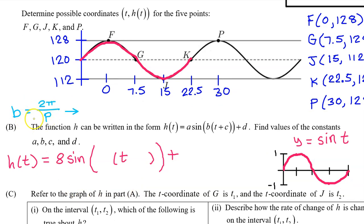I want you to memorize that the b value is given by this little formula, 2π divided by the period. In this case, we are told that it takes 30 minutes from high point to high point, so the period is 30. Therefore, the b value will be 2π divided by 30. And this reduces down to π over 15. So we can fill in the b value of π over 15 right here.